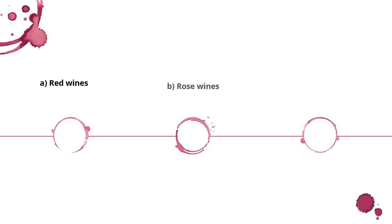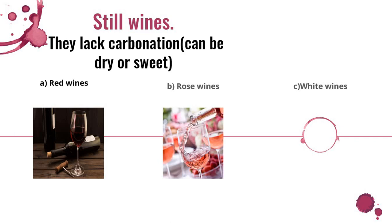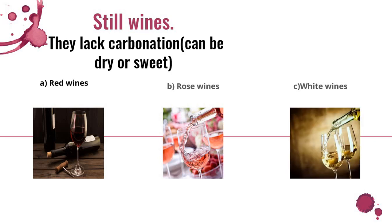We start with still wines. Still wines lack carbonation — carbonation is like when you open a Coca-Cola and the fizzing and bubbling that comes out. Still wines lack that; they are just still. We have three types of still wines: red wines, rosé wines, and white wines. Rosé wines are mostly used at parties and are pink in color, and most of them are sweet. White wines are served cold while red wines are served at room temperature. Rosé wines can be served at any temperature.